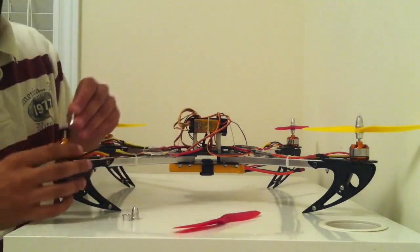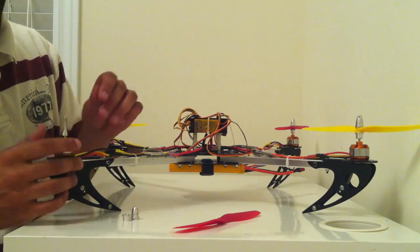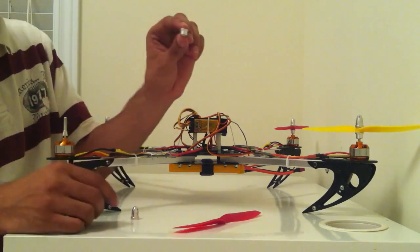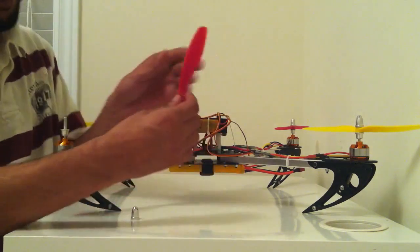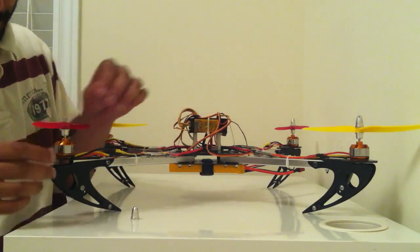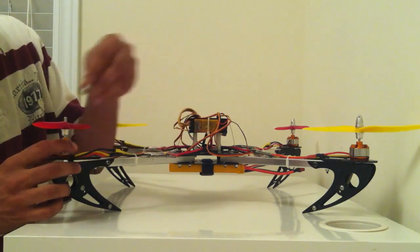First, we'll install the sleeve onto the motor. Next, the bottom mounting screw. Then, our prop. And finally, we screw it in.